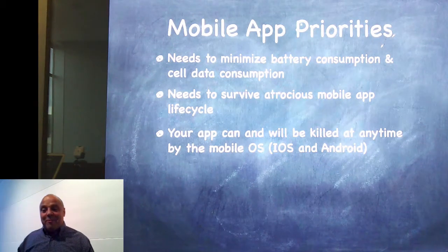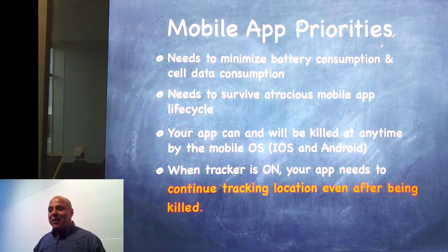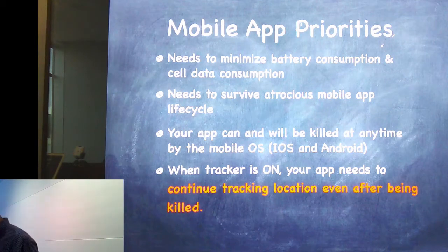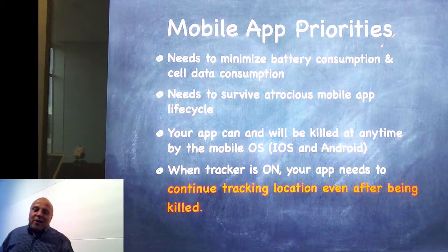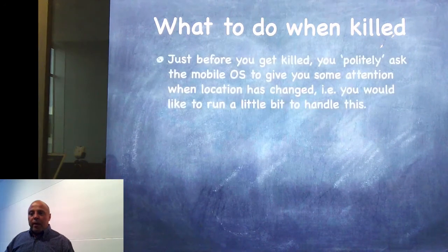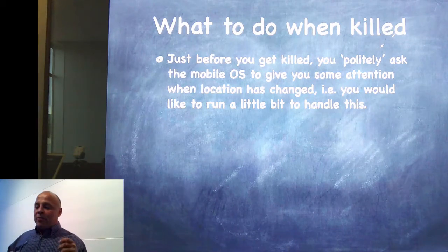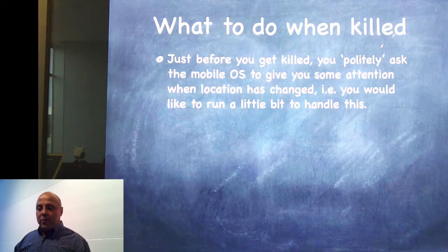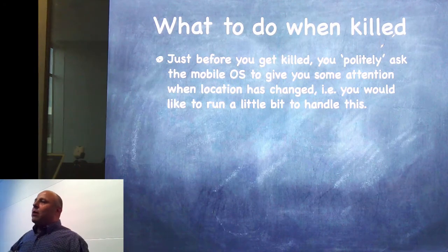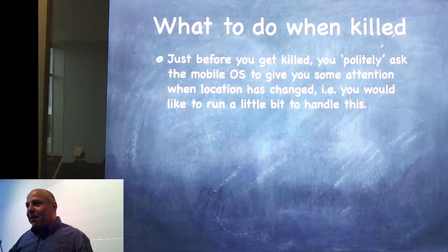You have to continue your tracker — if the user requested the tracker to be on, your app needs to continue tracking location even after being killed. I had to wrap my head around that — my app is getting killed, what do I do? There are tricks here. Just before your app gets killed, you politely ask the mobile OS to give you some attention when location has changed, and you tell the mobile OS that you'd like to run a little bit whenever your location changes — you can't run a lot, you have a very small window of time.